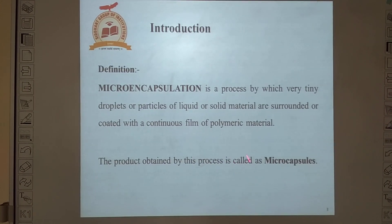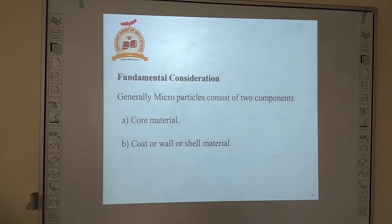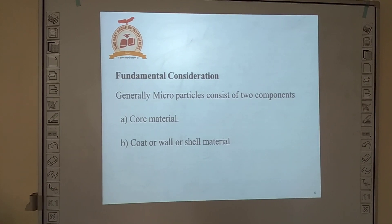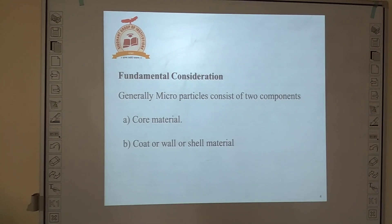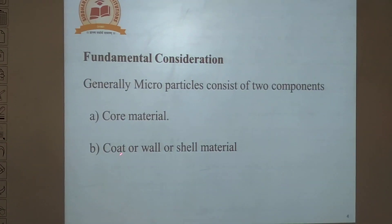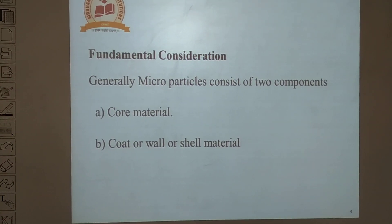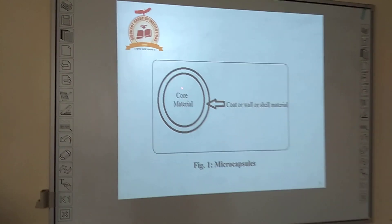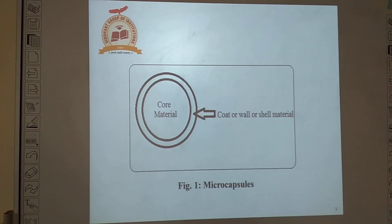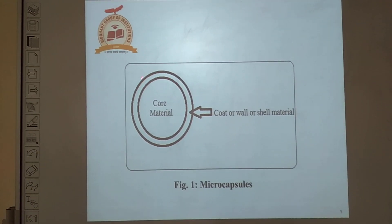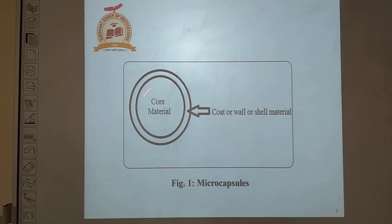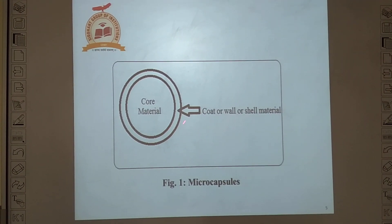The product obtained from this process is called microcapsules. In microencapsulation, two components are very important. First is the core material and second is the coat, wall, or shell material. Whenever microcapsules are formed, the inside material is called the core material, which is made from either liquid or solid, and this core material is coated with the polymeric material, also called the coat, wall, or shell material.